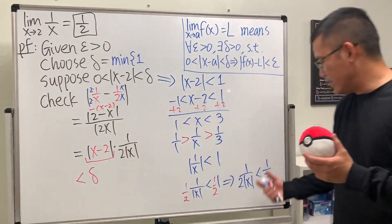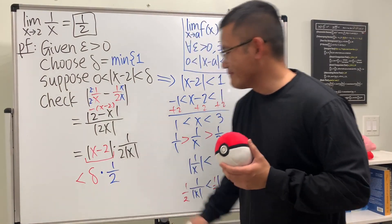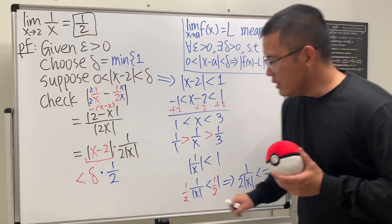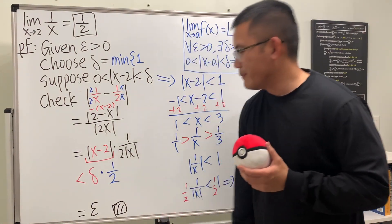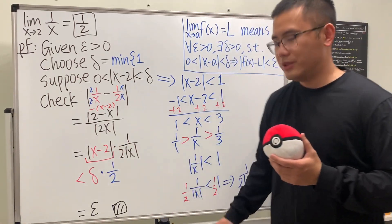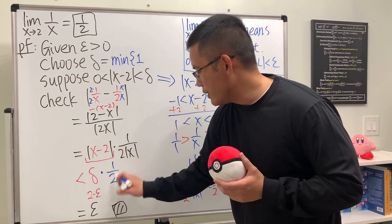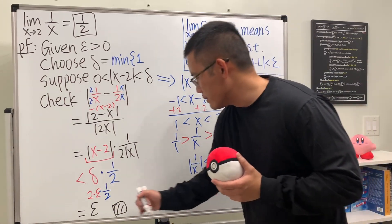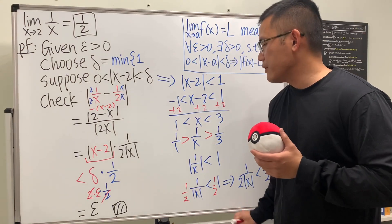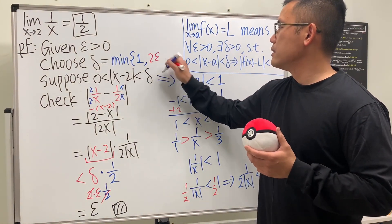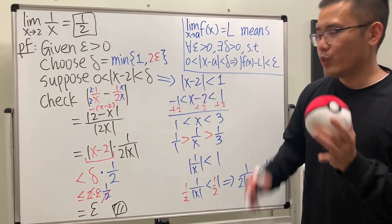So that factor is less than 1 over 2, and we already have the less-than symbol there. In the end, we want epsilon, so we choose delta to be the minimum of 1 and 2 times epsilon. When we multiply by one half, the 2 cancels out perfectly, giving us epsilon. We write 2 epsilon here as well, close the brace, and we are done.